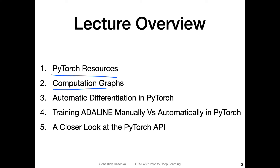Then I will introduce the concept of computation graphs. This is basically how we think of a series of computations in the computer — a computation graph that we can use to visualize a computation like a prediction in a neural network. Using the concept of a computation graph, I will explain how automatic differentiation works in PyTorch, which builds such a graph under the hood and backtracks it to compute the gradients.